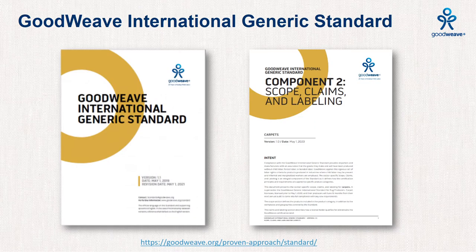The new standard is comprised of two components. Component 1 establishes the principles and requirements that are universal to all GoodWeave product categories. Component 2 is the Scope, Claims, and Labeling document that sets out the requirements for certifying specific product categories. There is currently an SCL for carpets and one for home textiles. For compliance purposes, the GoodWeave Standard is the official document against which suppliers are audited.